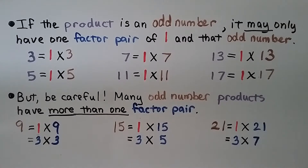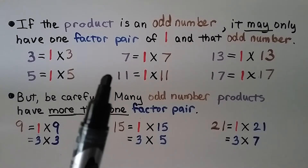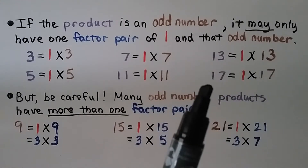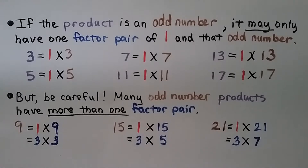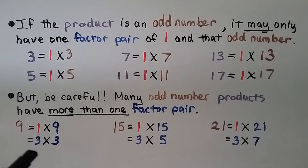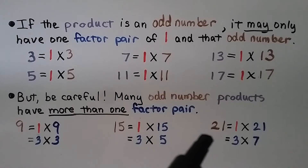If the product is an odd number, it may only have one factor pair of 1 and that odd number. For example, 5 has one factor pair of 1 and 5; 7 has only one factor pair of 1 and 7; 11 has only 1 and 11; 13 only has 1 and 13; 17 only has 1 and 17. But be careful — many odd number products have more than one factor pair. Don't assume just because it's odd that it only has one factor pair. 9 has 1 times 9 and 3 times 3; 15 has 1 times 15 and 3 times 5; 21 has 1 times 21 and 3 times 7.